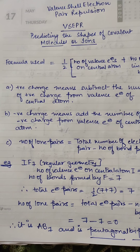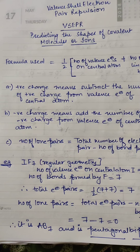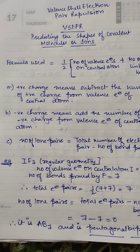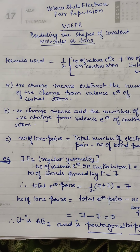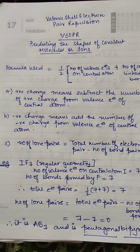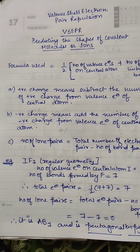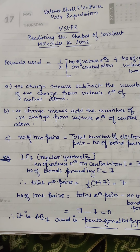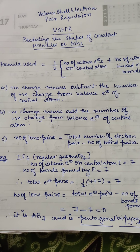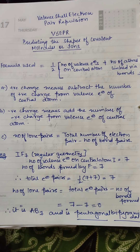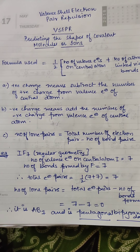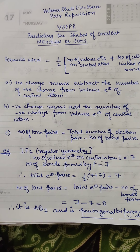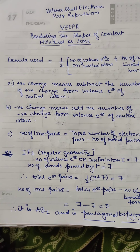In this video you will learn about valence shell electron pair repulsion. As you have already studied about geometries, there are two types of geometries: regular and irregular. Regular geometry basically means that there will be a presence of bond pairs only, and irregular geometry means that there will be a presence of bond pair as well as lone pair.